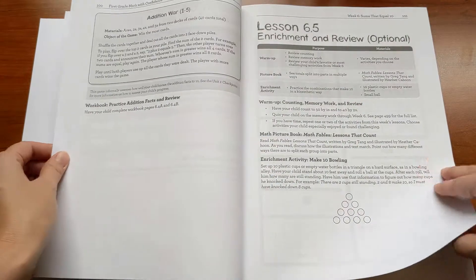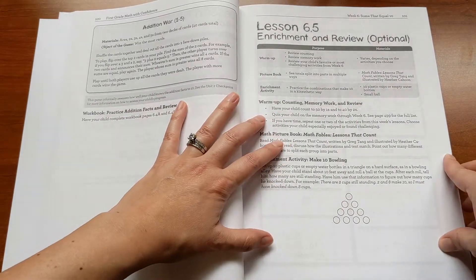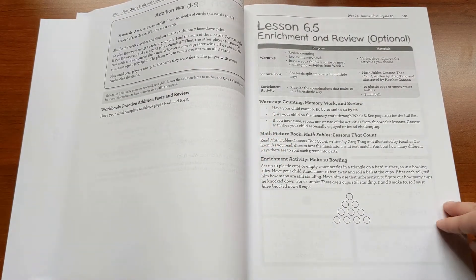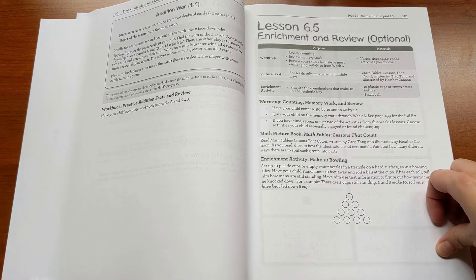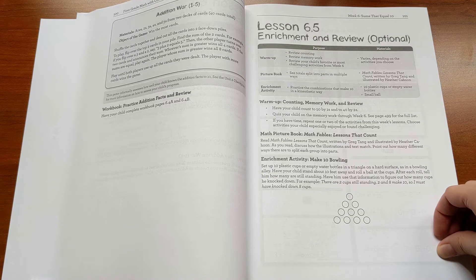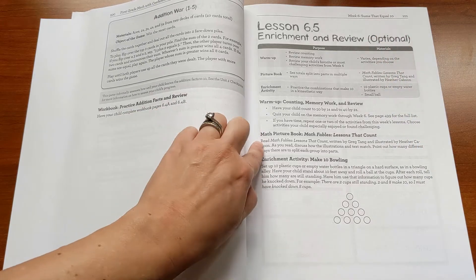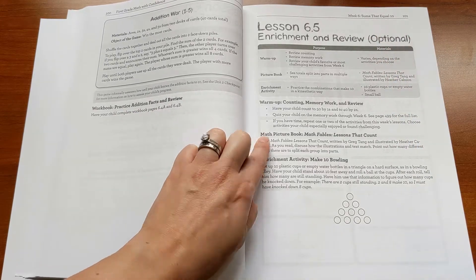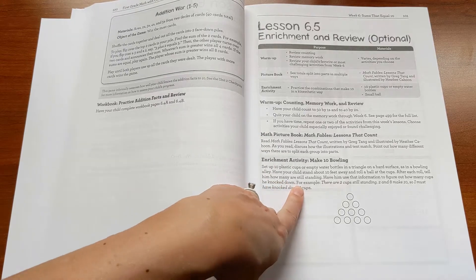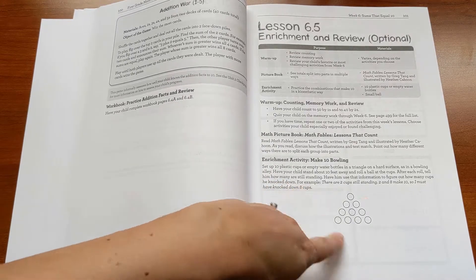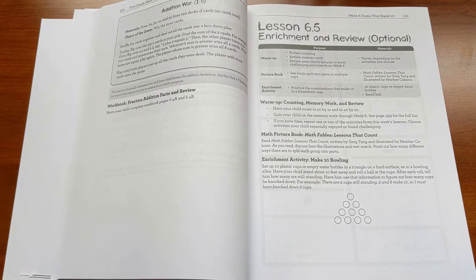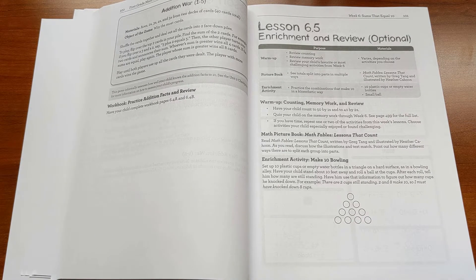And so I'm just flipping through here. Oh, here's an enrichment lesson. And so as I said, each week has four core lessons, and then there's an enrichment lesson at the end. And so this one is the end of a week of sums that equal 10. So there's a math picture book that's suggested. And then the enrichment activity here is make 10 bowling—setting up 10 plastic cups like a bowling alley, knocking them down with a ball, and then saying how many are up and how many are down to practice those pairs that make 10.